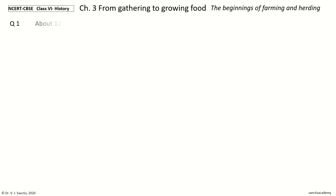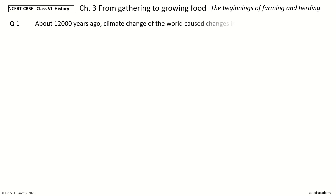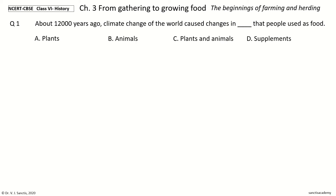Question 1. About 12,000 years ago, climate change of the world caused changes in what that people used as food. The options are: plants; animals; plants and animals; supplements. And the answer is plants and animals.